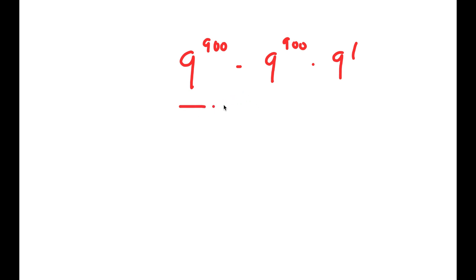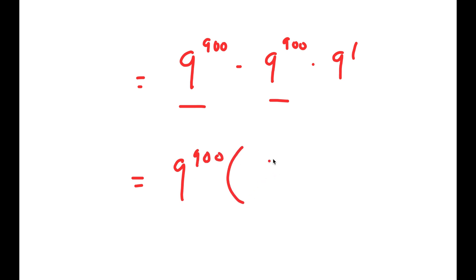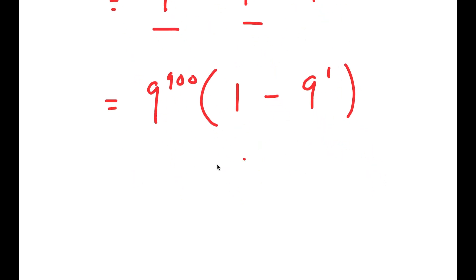So now from here, these two terms have the number 9 to the power of 900 in them. So I'm going to factor out 9 to the power of 900, which is what I said I was going to do at the beginning of the video. Now I get 9 to the power of 900 times 1 minus 9 to the power of 1.